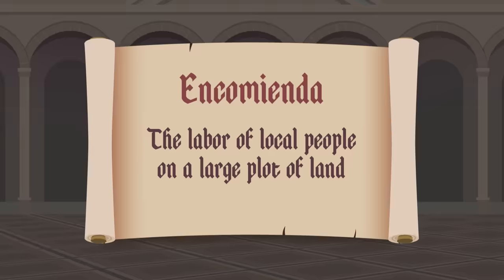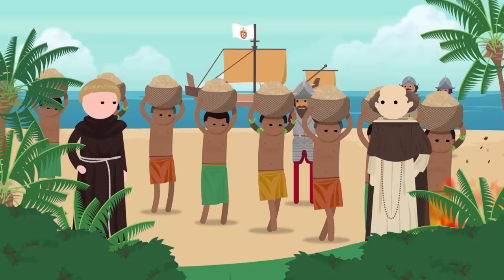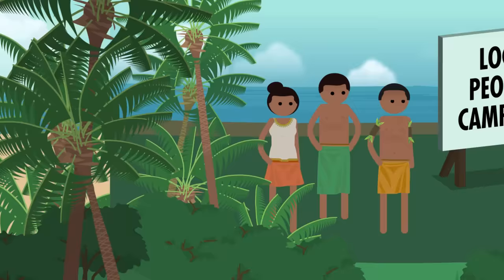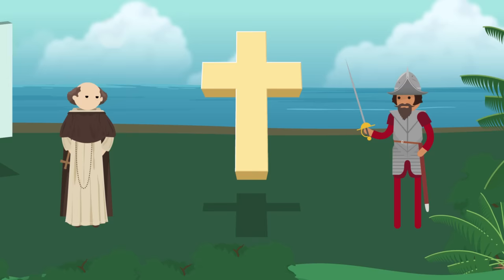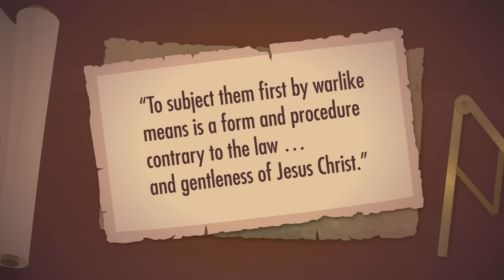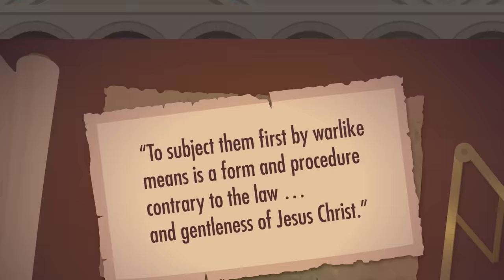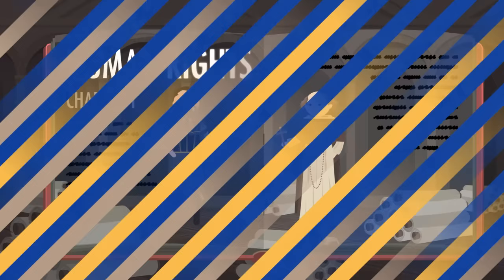The Spanish government awarded its soldiers and adventurers encomienda—that is, the labor of local people on a large plot of land. But there were critics of this system among Europeans—perhaps most notably Bartolome Las Casas, a Catholic missionary who had helped in the savage conquest of Cuba and received an encomienda for his participation. Then the preaching of a Dominican friar made him see conquest in a different light, and he began a campaign on behalf of local people. Las Casas, while underscoring the benefits of conversion to Christianity, lambasted his fellow conquerors for their murder, brutality, and pillage. He wrote of Native Americans: "to subject them first by warlike means is a form and procedure contrary to the law and gentleness of Jesus Christ." Las Casas lobbied the Spanish court, beginning, in some historians' minds, the drive for what today are considered human rights.